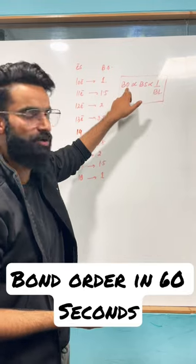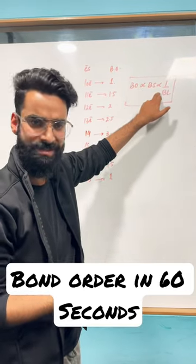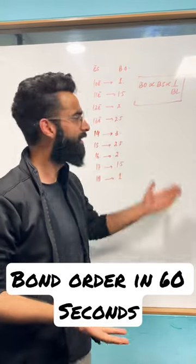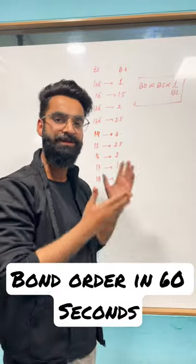That's all. And do remember, your bond order is directly proportional to bond strength, which is inversely proportional to bond length. So three questions are done and dusted with this particular video.